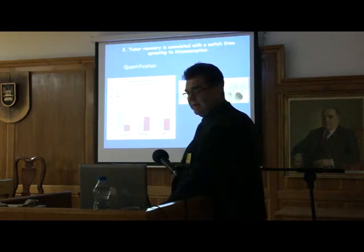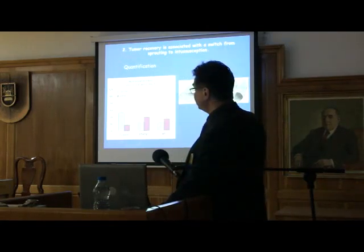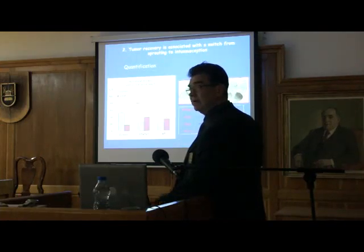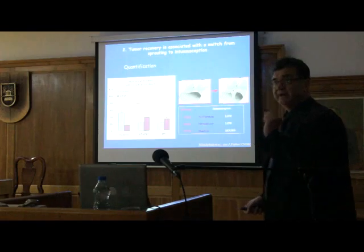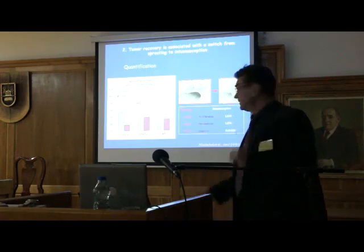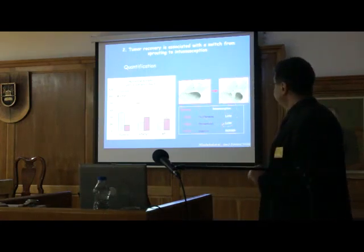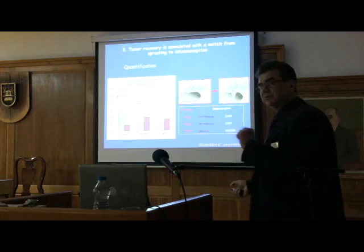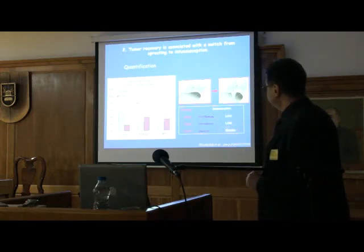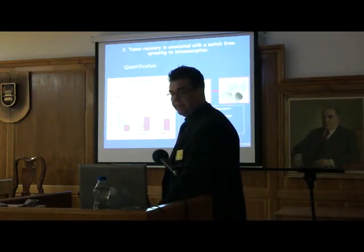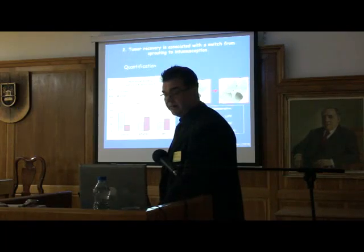To demonstrate this switch, we do quantification of the number of pillars and the number of sprouts, and we find that there really is an angiogenic switch from sprouting to intussusception. This could be an escape mechanism — because with intussusception, you could apply anti-proliferative drugs that don't target the vessels since the proliferation rate is very, very low. The permeability is physiological — there is no high permeability as with sprouting — so drugs cannot easily penetrate the vessels. This is a very rapid process that could contribute to resistance to anti-angiogenic treatment and radiotherapy.